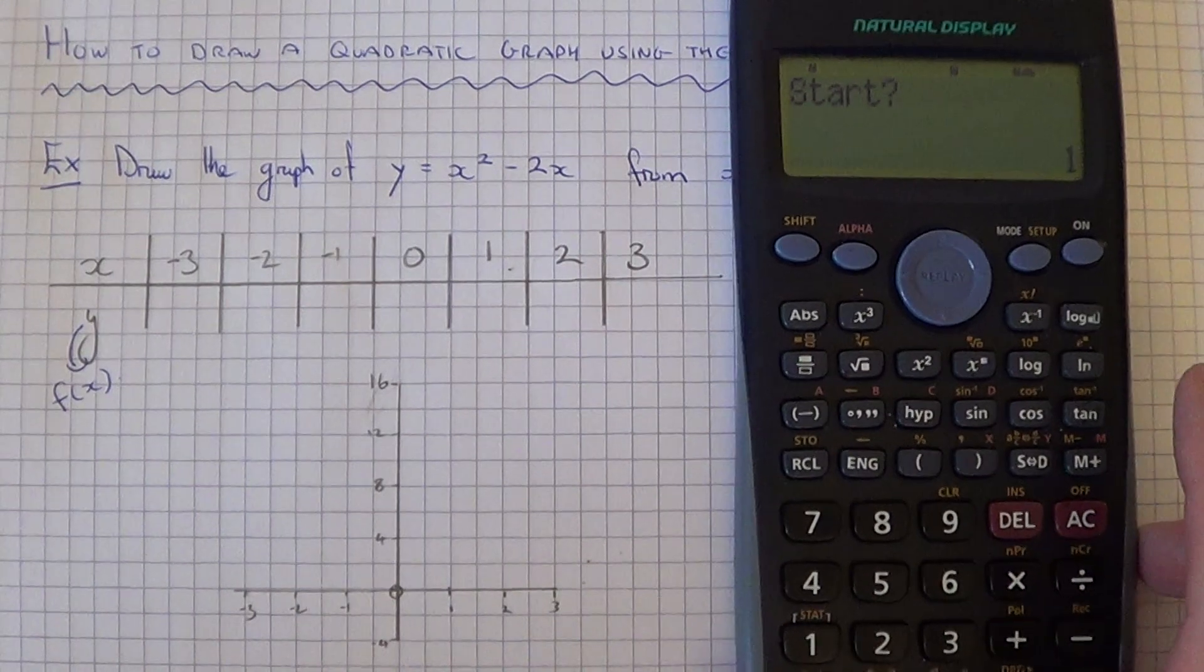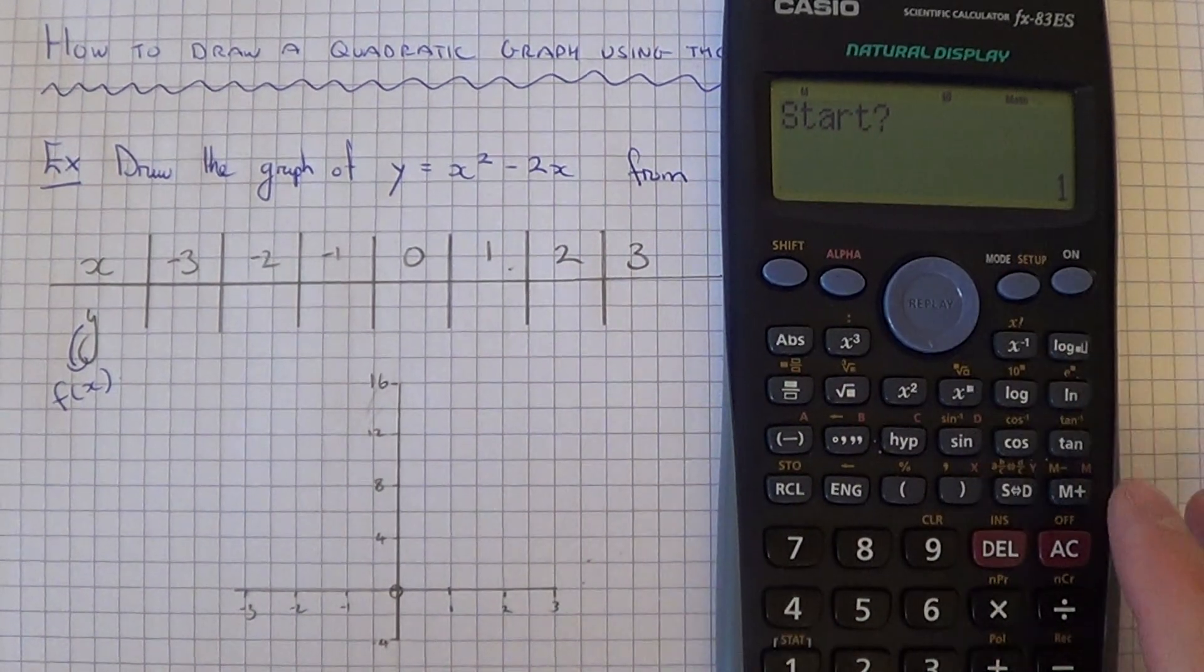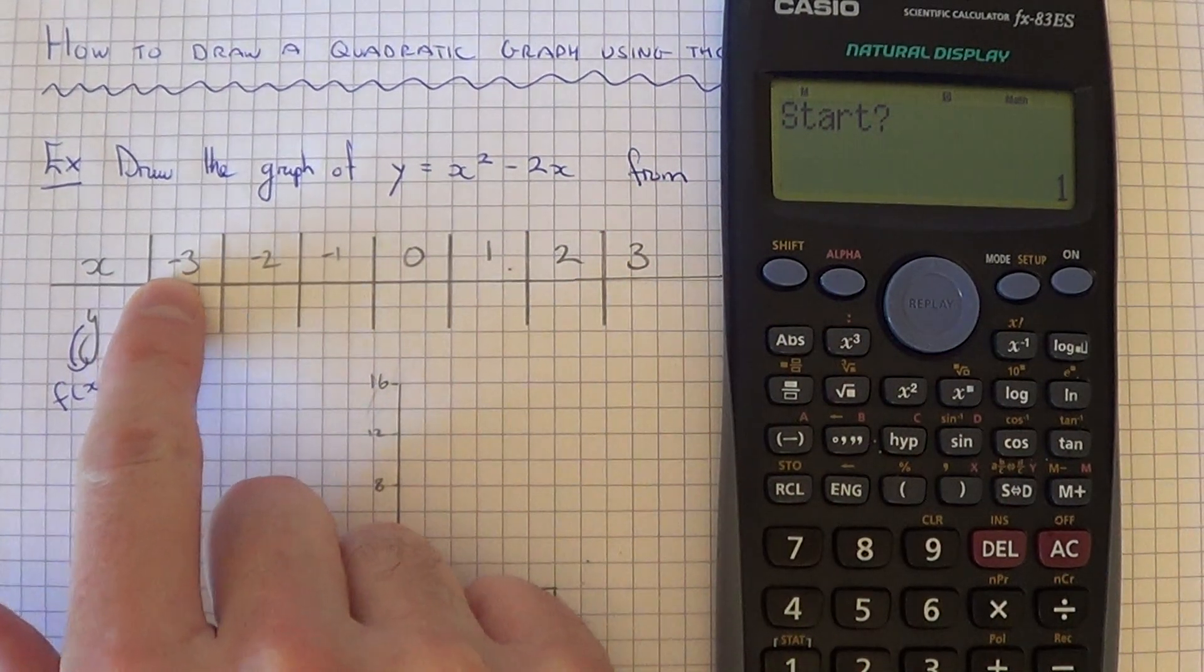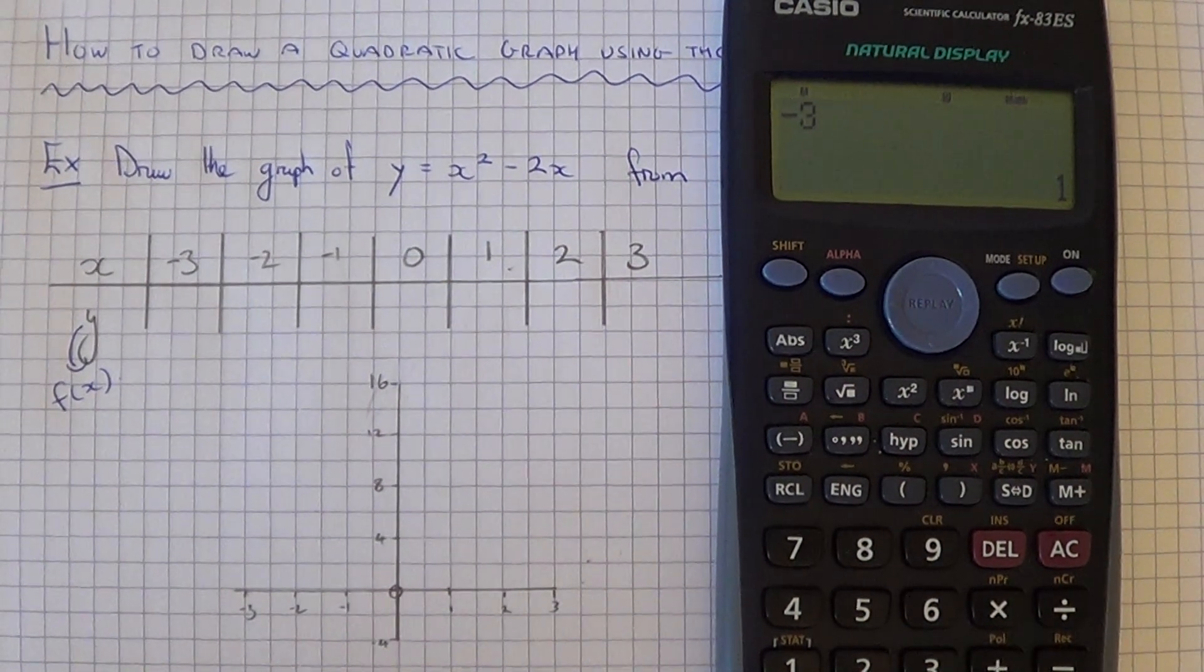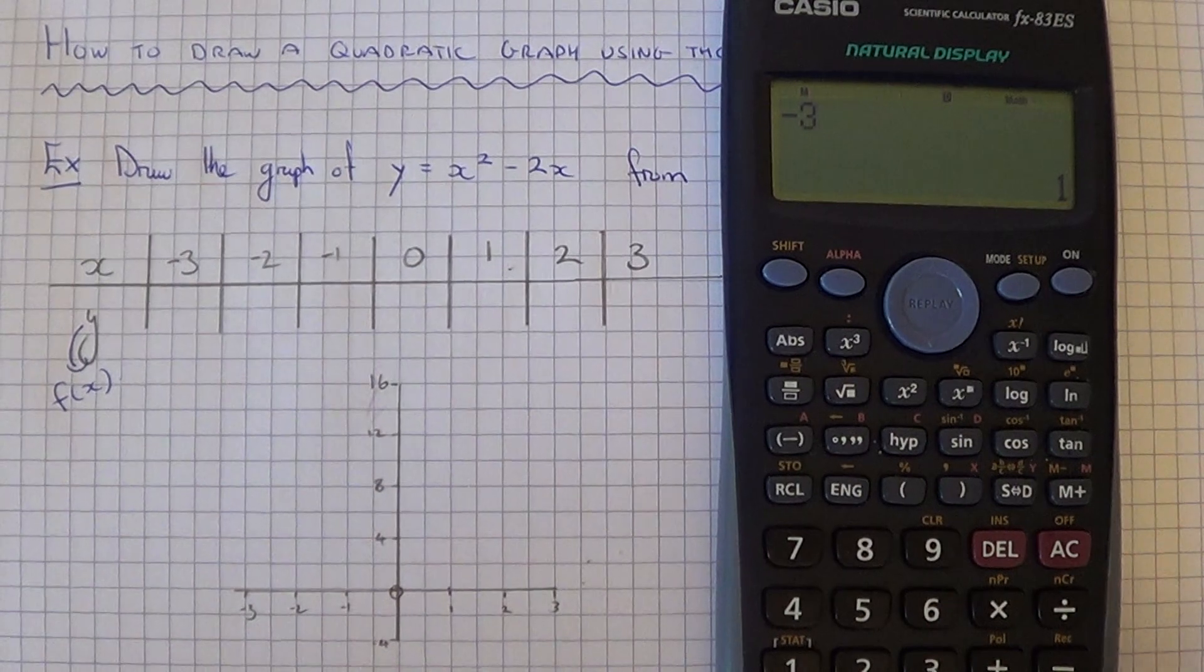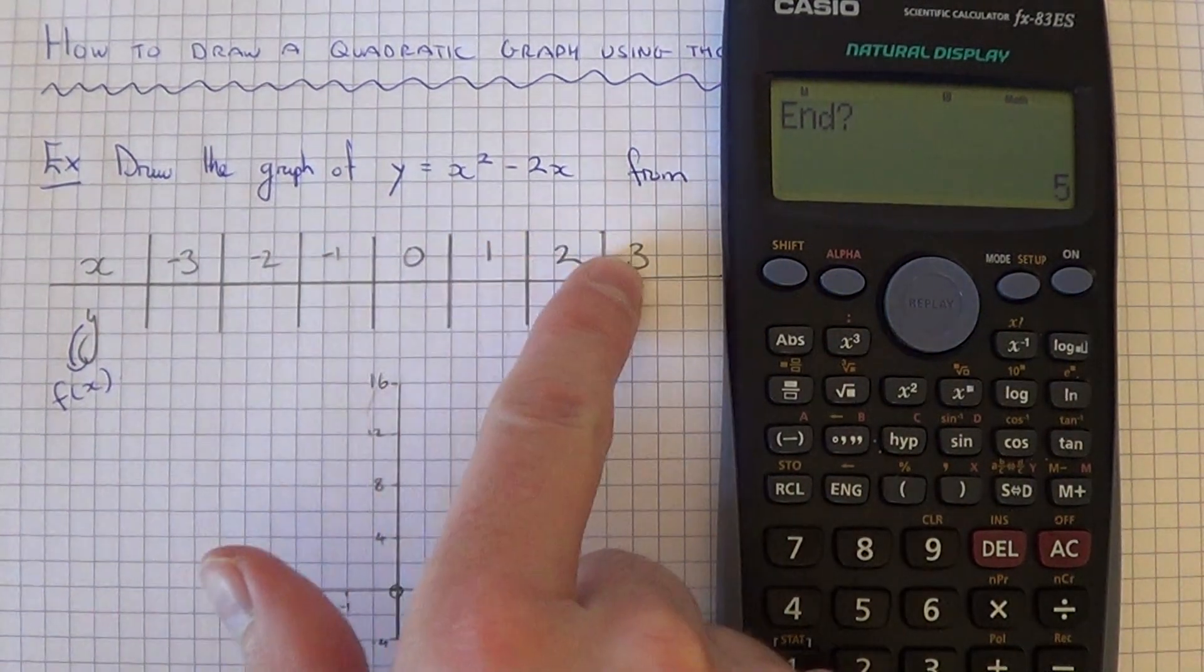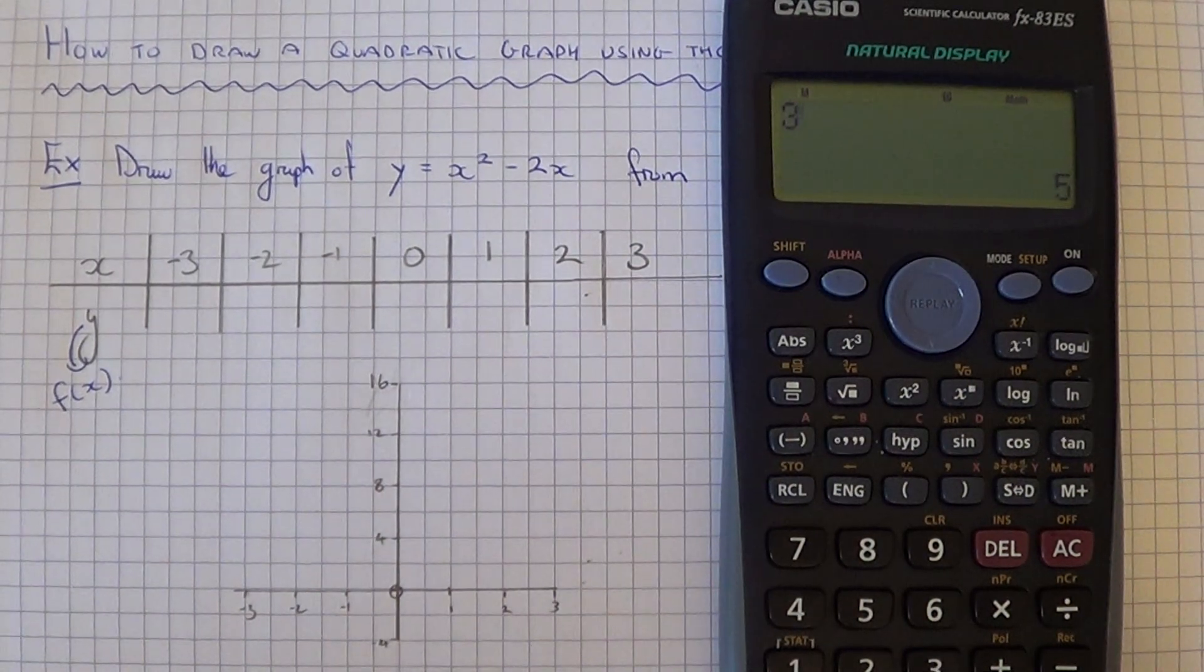You'll see it will say start and it's got a number 1 in. This is where you want to start from with your x coordinates. We want to start at minus 3, so overtype this and just put minus 3 in. Hit the equals and we want it to end at plus 3. So hit the 3, again hit your equals.